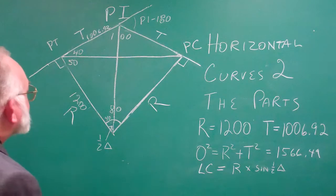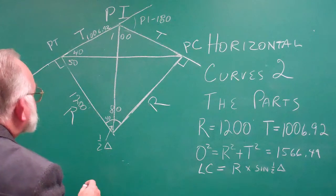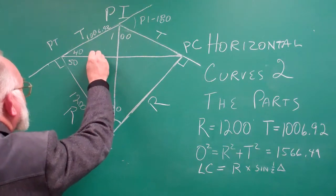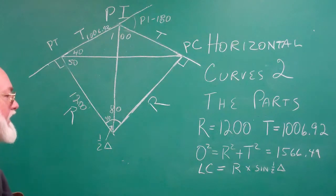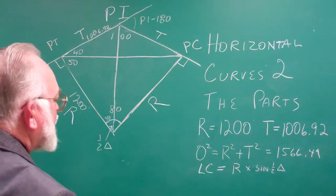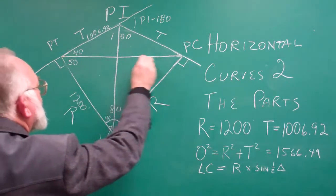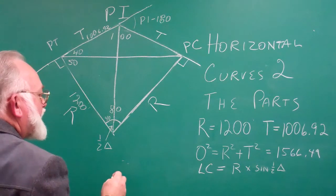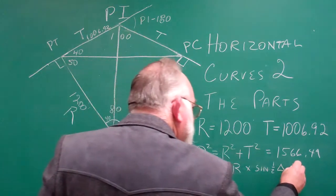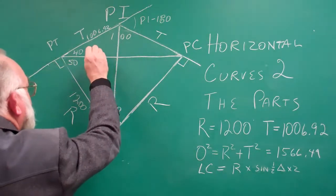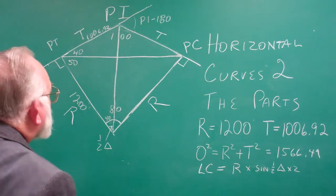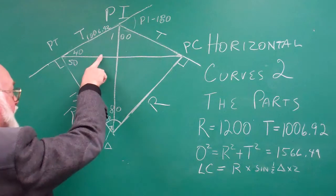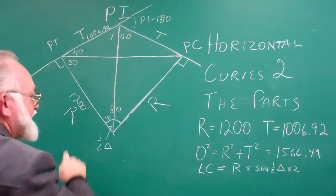First off, we're going for this length here, the long chord distance. The way we do it is we figure this, so this distance here is equal to twice whatever we're going to get, or the long chord is equal to twice that distance.